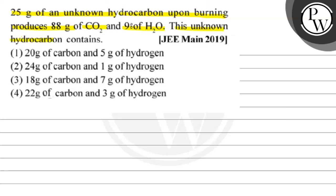upon burning produces 88 grams of carbon dioxide and 9 grams of water. This unknown hydrocarbon contains: option 1, 20 grams of carbon and 5 grams of hydrogen; option 2, 24 grams of carbon and 1 gram of hydrogen; option 3, 18 grams of carbon and 7 grams of hydrogen; or option 4, 22 grams of carbon and 3 grams of hydrogen.